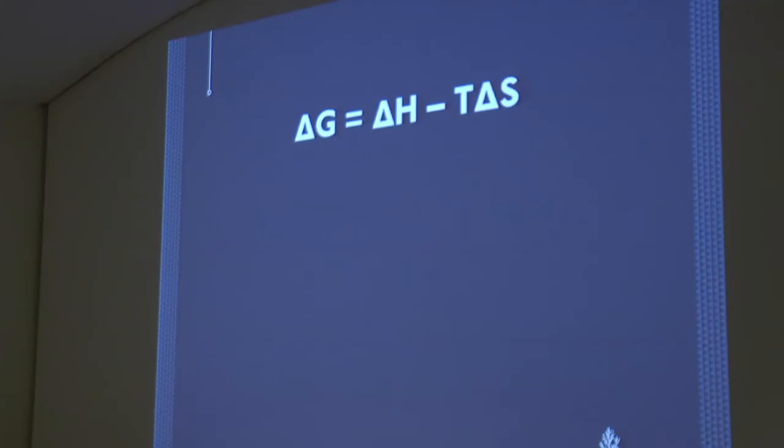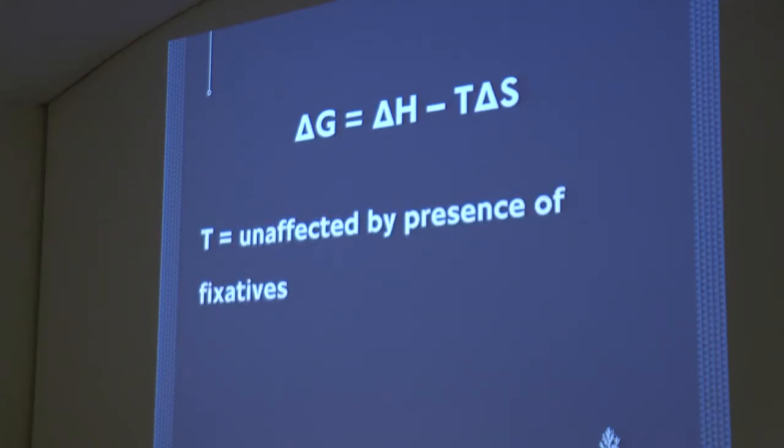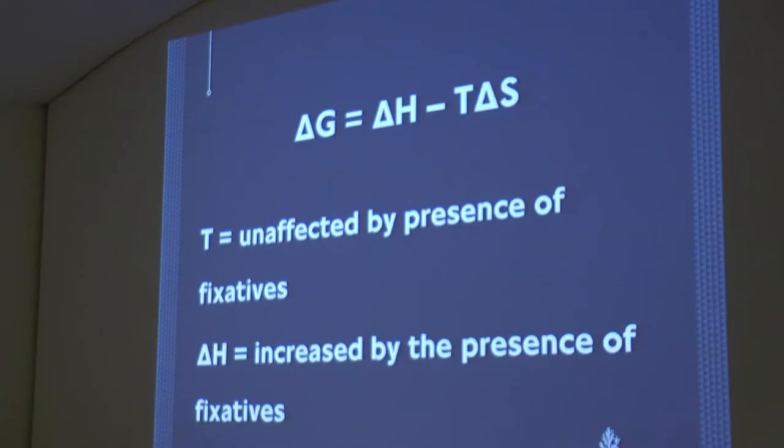Taking this back to the original equation, delta G equals delta H minus T delta S: T is unaffected by the presence of fixatives; delta H is increased by the presence of fixatives, made more positive; delta S is decreased by the presence of a fixative — smaller overall. So delta G is more positive — we've hindered evaporation. Don't worry too much if you didn't follow that; it's a very simplified model, but it's definitely not involving missing atoms. That's the point I wanted to get across.